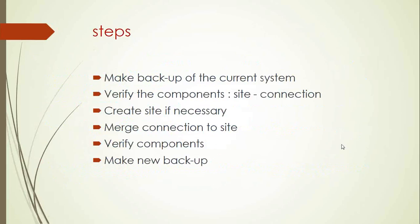Here are the steps: Make a backup of the current system. Verify the components — verify the site, connection, schedules, and access levels. If we do not have a site, for example, we could have all our connections created directly under the gateway, so we can create a site if necessary. Then we'll go with the step of merging connections to the site. After we're done, we'll verify that everything is okay, verify the components, and then make a new backup.